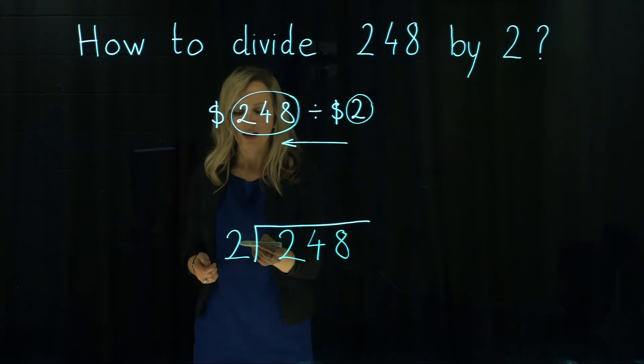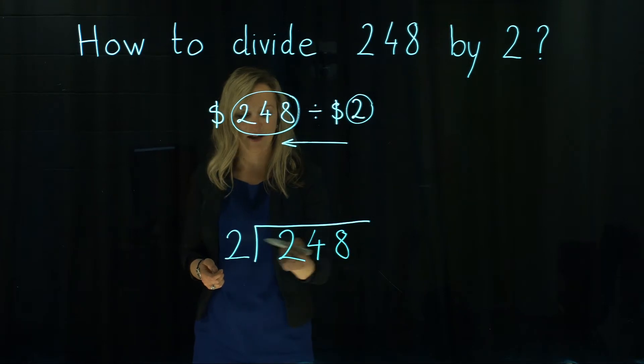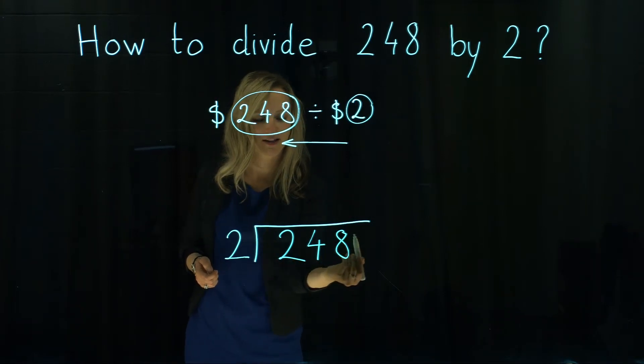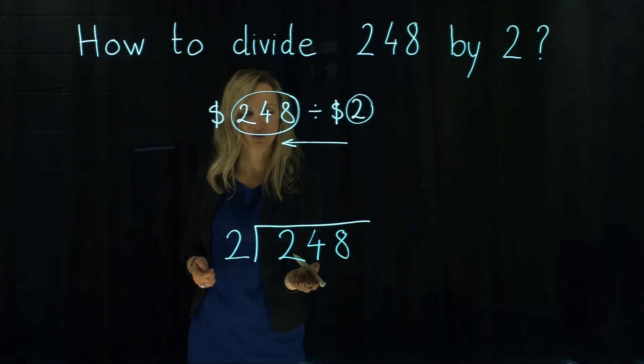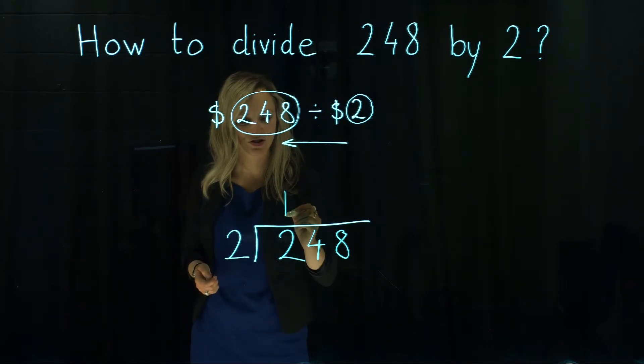Then we say we go step by step, digit per digit. Does 2 go in a number 2? Yes it does. How many times? It goes just once.